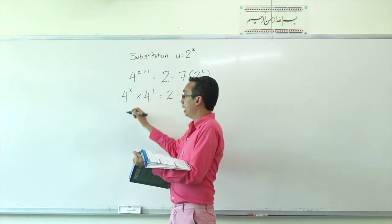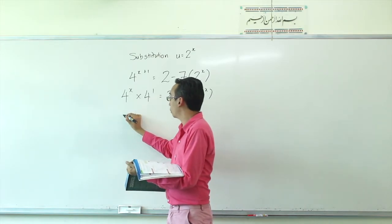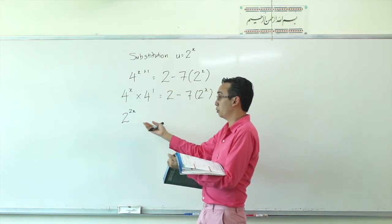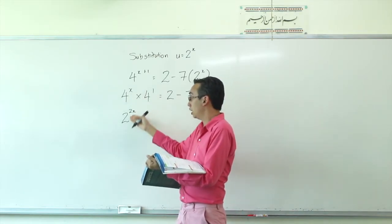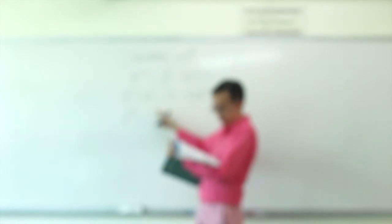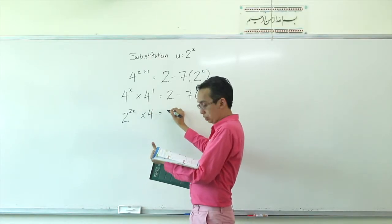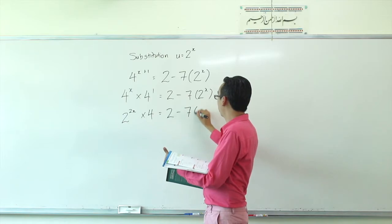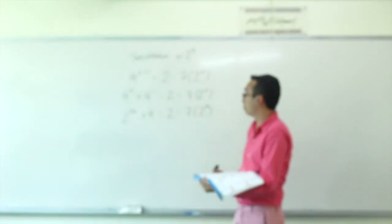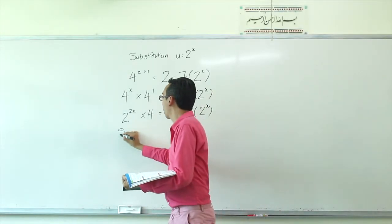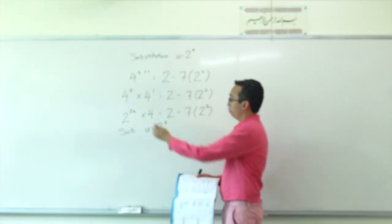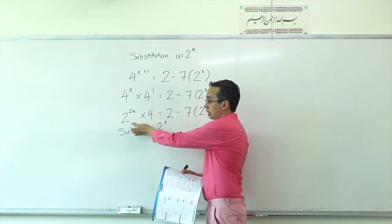For 4 to the power of X, since 4 is 2 squared, this becomes 2 to the power of 2X. The other factor is just 4. The right-hand side remains 2 minus 7 times 2 to the power of X. Now when we substitute U as 2 to the power of X, we can see this relates to 2 to the power of X in the equation.